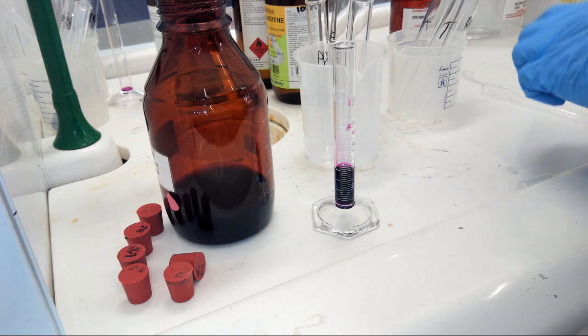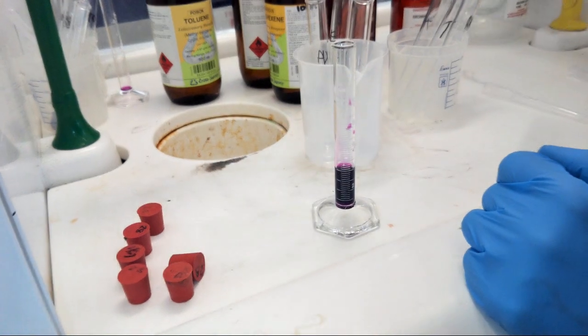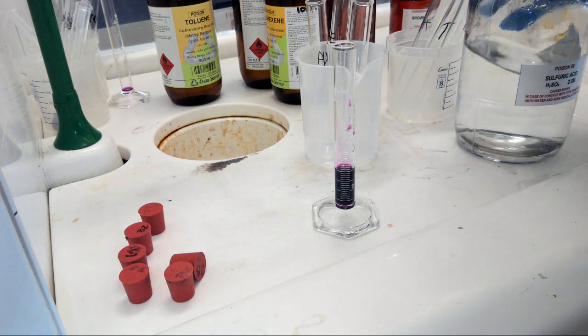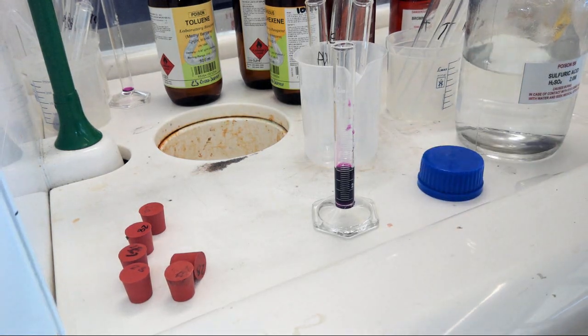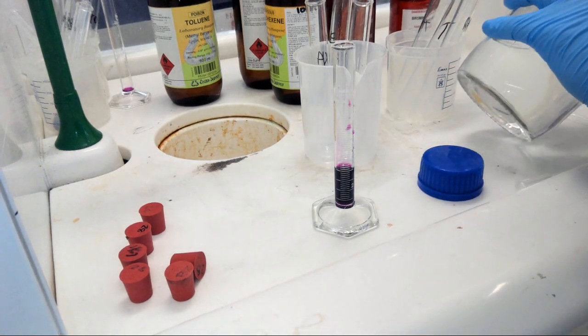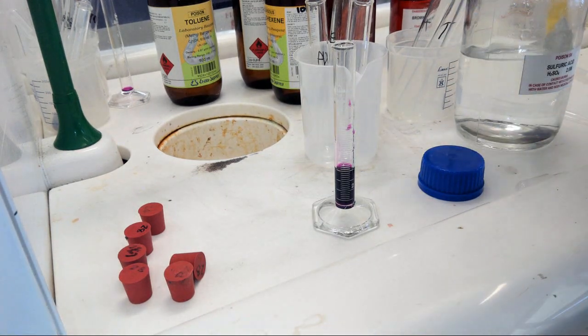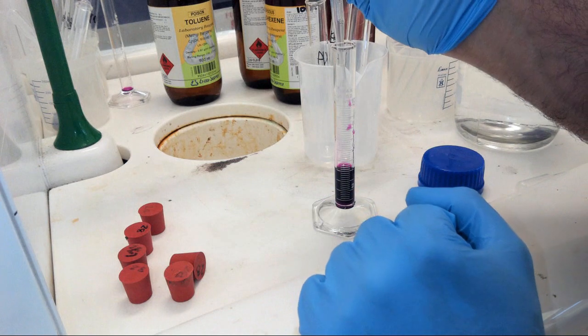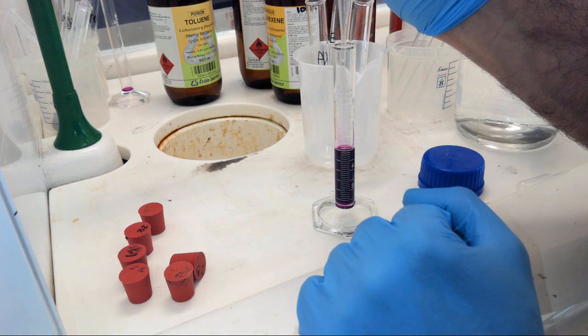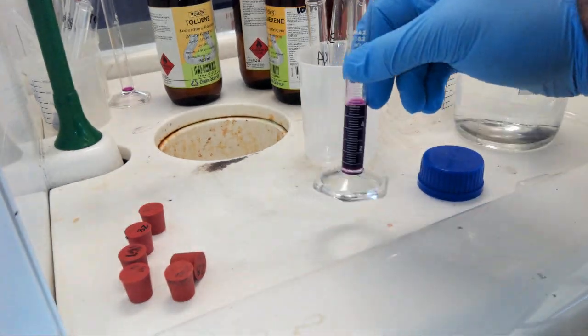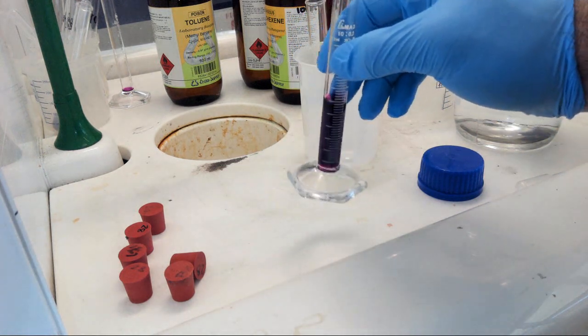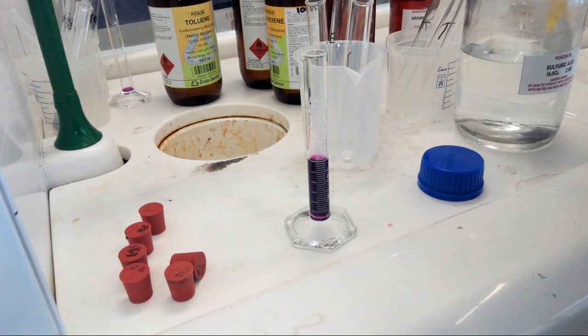We need two mils of sulfuric acid. And that's exactly two mil there. So we've got a nice little acidified potassium permanganate, as it says under step two.